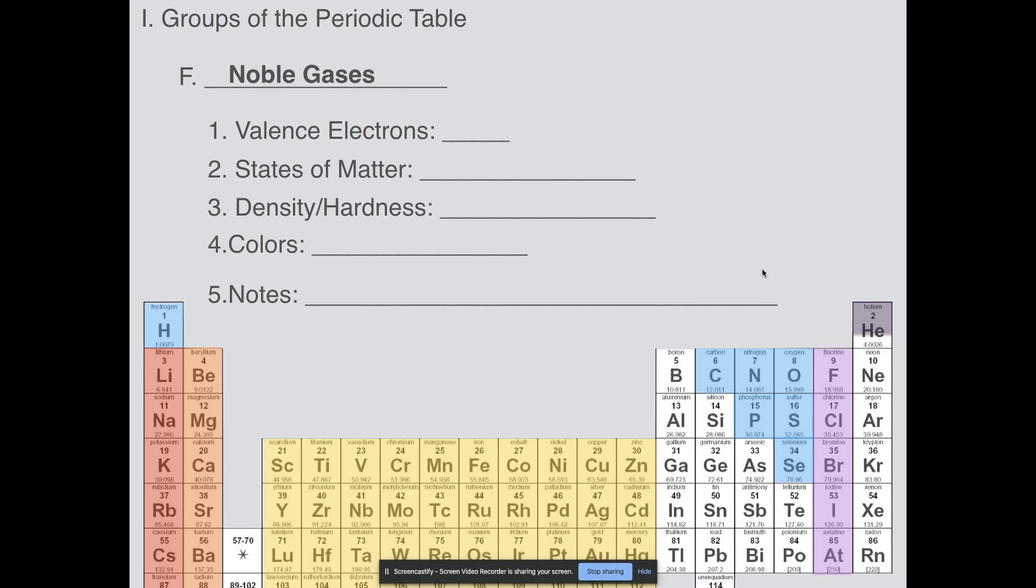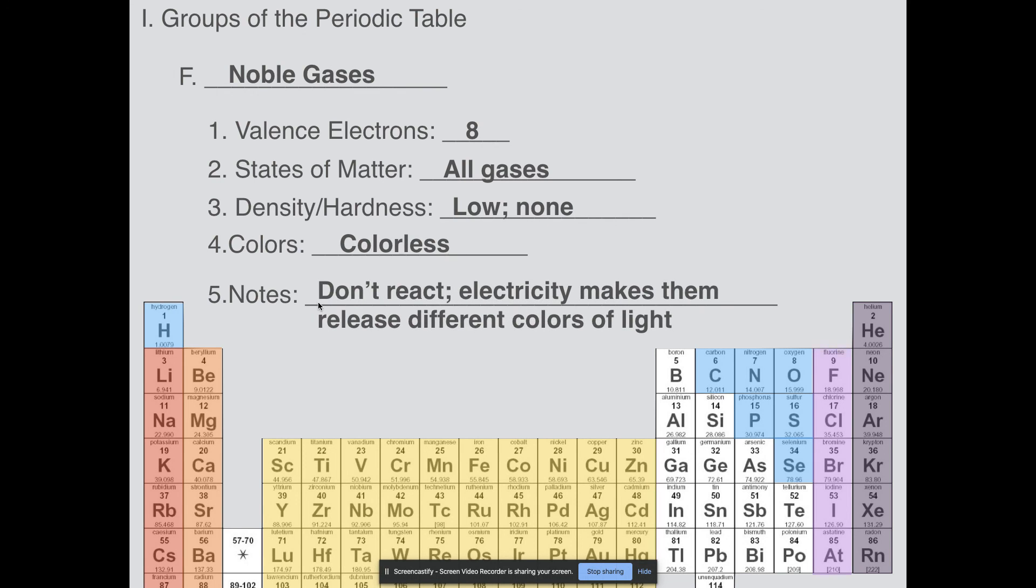Last but not least, we have the noble gases. The noble gases, our last one right here, they have eight valence electrons. The only exception to that, which I forgot to include, is helium has two. It only has two electrons, so it can't have eight in its valence state. Remember, it goes 1s2, that would be helium's electron configuration. States of matter: they are all gases, hence why they're called the noble gases. They are very low density, and they have no hardness because they're not solids. They are all colorless, but something that makes them really stand out: when you pump electricity through them or ionize them, they release different colors. The other big note is they're called the noble gases because they don't react. Generally speaking, they don't react with things.